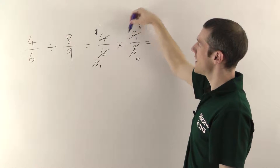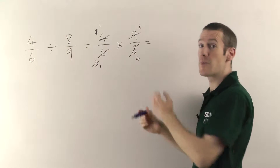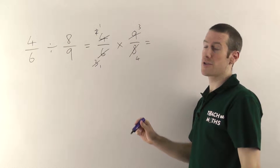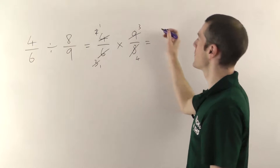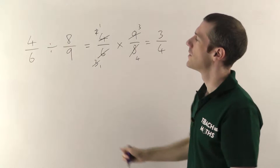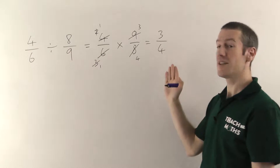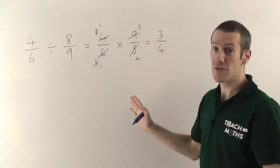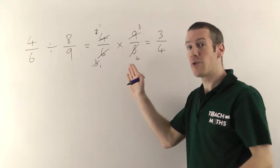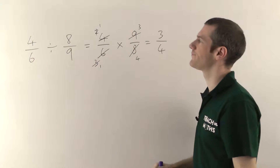So now we've got 1 times 3 on the top and 1 times 4 on the bottom. Remember when you're multiplying fractions you just multiply the tops and you multiply the bottoms. So 1 times 3 is 3 and 1 times 4 is 4. So 4 sixths divided by 8 ninths is 3 quarters. It's very straightforward. I know this can look a little bit messy but actually doing it in practice is quite easy and you can do it very quickly with the cancelling when you're used to it.